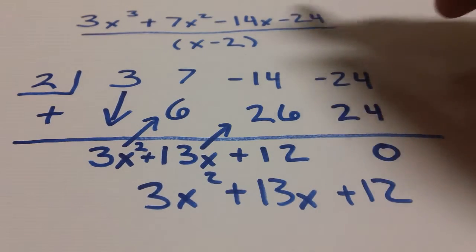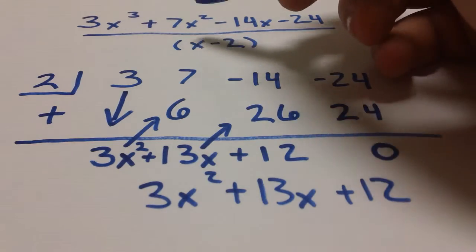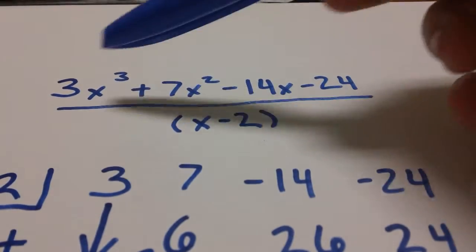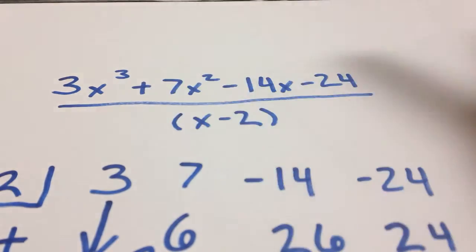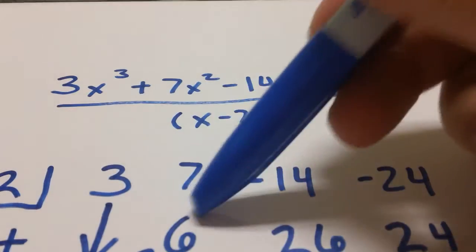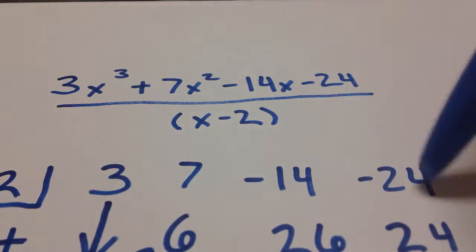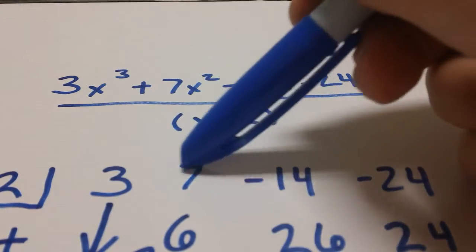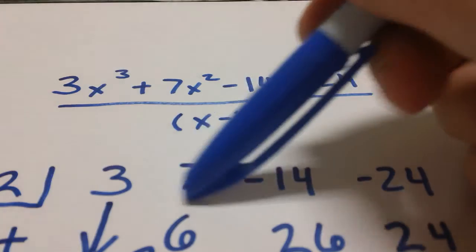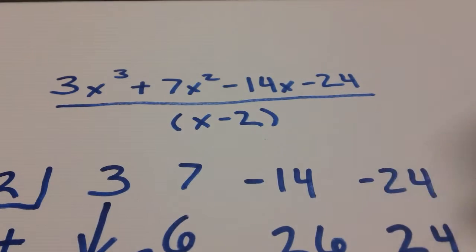Now one thing to always know about synthetic division problems, I'm probably not going to go into another example but this is very important to know. If you in your original problem, let's say you went straight from 3x to the third to minus 14x, let's say you were missing that x squared term, you still have to account for that whenever you're setting up this problem. So let's say this wasn't there, we would still have to write 3 and then we would write 0 indicating there is nothing or no x to the squared value, and then we would move on to that negative 14 and then negative 24.